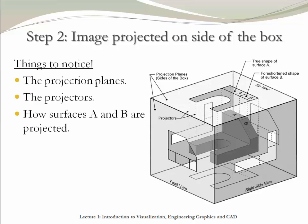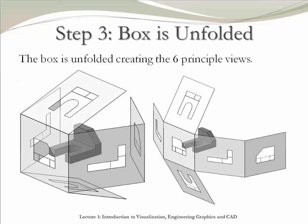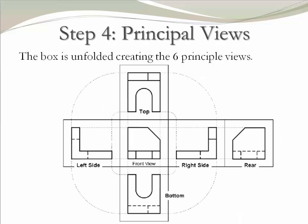Notice how all the surfaces are visible in the projection planes. Be careful when projecting inclined surfaces — for example, this object has an incline that projects in the front view, but the right and top views only show rectangles. The third step is to unfold the box, which shows all the principal views. The fourth step is to show all six principal views organized in a standardized form. The front view is the most important and remains in the middle, while the five other views are aligned as shown.